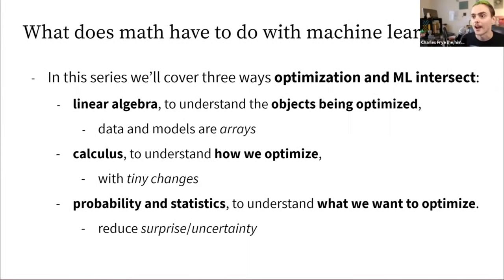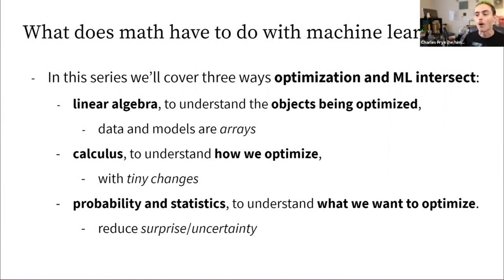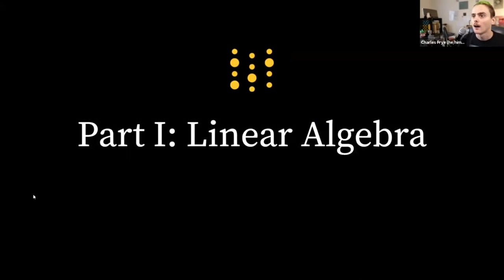We'll cover linear algebra, which helps us understand the objects being optimized; calculus, which helps us understand how we optimize those objects; and probability and statistics, which help us understand what it is we are optimizing — what we are making better. We'll start with linear algebra: understanding the objects that are being optimized.